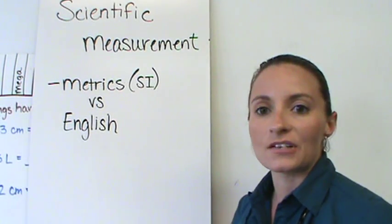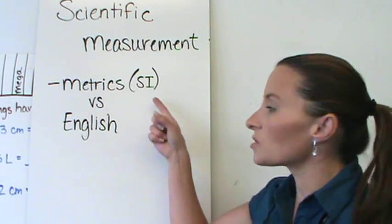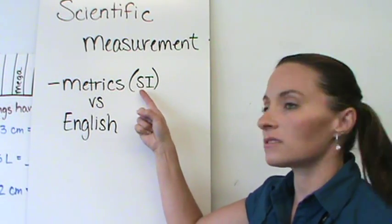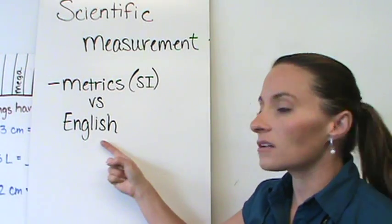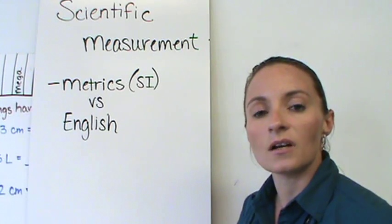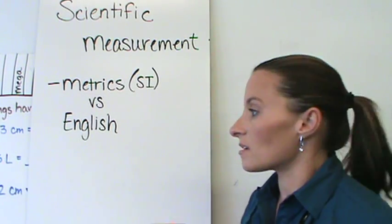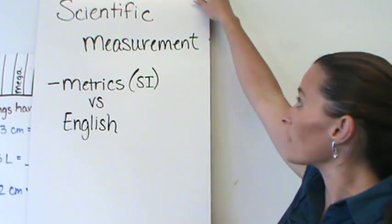Welcome to today's lesson on scientific measurement. Today we're going to take a look at the differences between metrics, what's also called SI units, and English units. We're going to talk about the differences, what we use in science, and that's going to be the major piece of today's lesson.